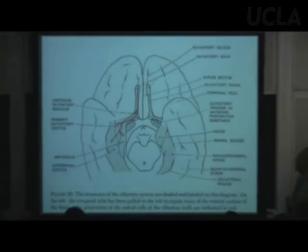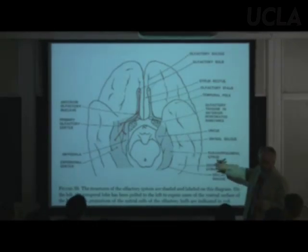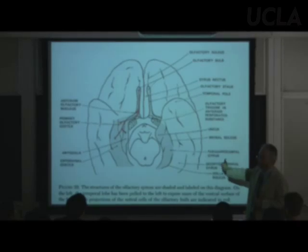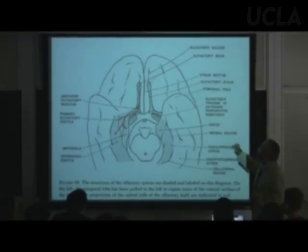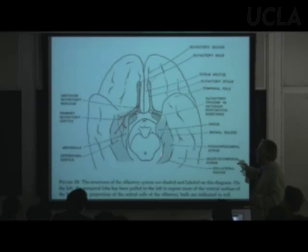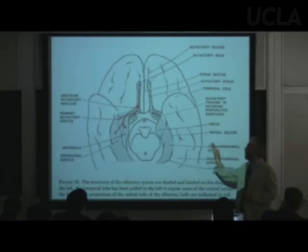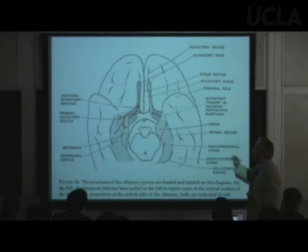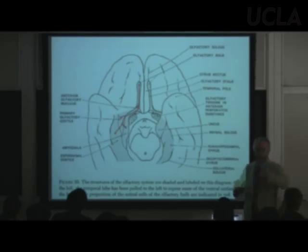Here's what the olfactory system looks like on a human — a ventral view with rostral up. We can see the projections of the olfactory bulb. The mitral cells give rise to axons that leave the bulb and go out laterally, forming the lateral olfactory tract or stria that we saw in lab. The artist has pulled the cortex out laterally so we can see the terminations more clearly.